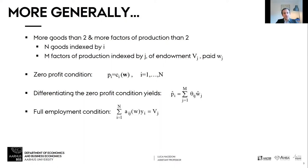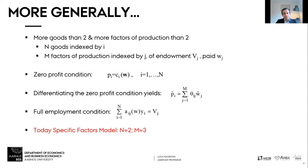The full employment condition is a summation over all goods of the unit factor requirement a_{ij} for factor j — which depends on w — times the output for that good, and this must equal the total endowment of the factor of production. Today we look at a specific case of this more general model, and as we will see there are quite a few differences from what we saw last time.